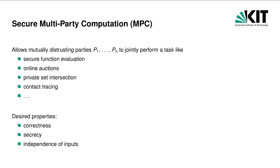For MPC protocols, we usually require correctness and secrecy in the sense of input privacy, which means that taking part in an MPC should not help a corrupted party learn anything about other parties' inputs that it cannot compute from its own input and output. We also want independence of inputs, meaning a corrupted party must not be able to choose its input in a way related to the input of an honest party. For example, we do not want a corrupted party in an auction to create a bid that is 1 Euro more than an honest party's bid, even if the corrupted party doesn't know what the honest party has bid.